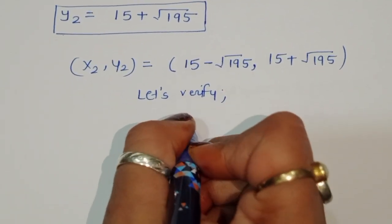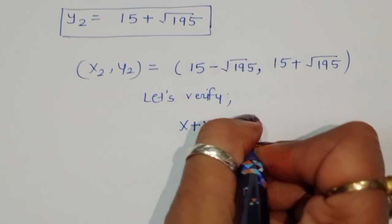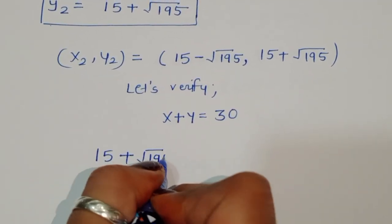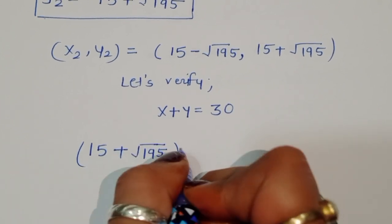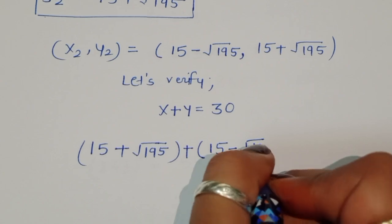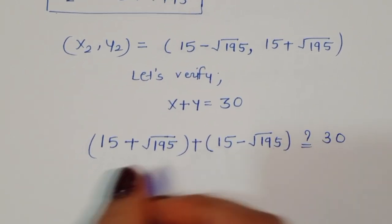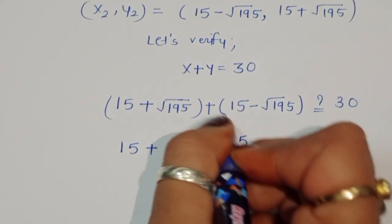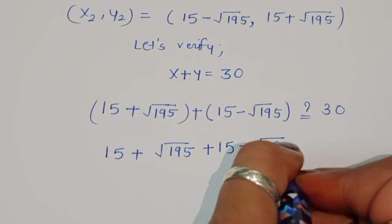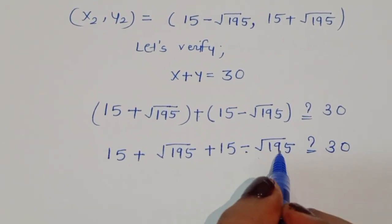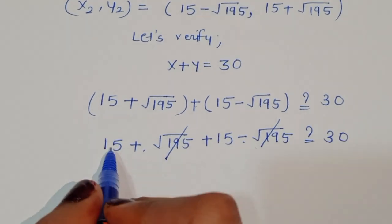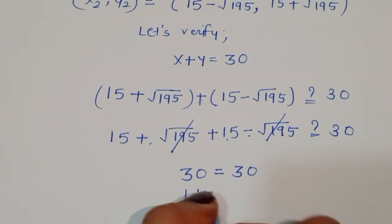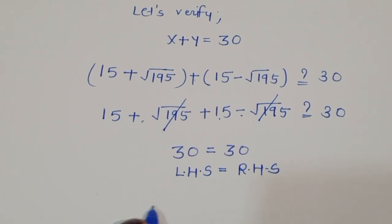Let's verify using equation 1: x plus y equals 30. Substituting x equals 15 plus square root of 195 and y equals 15 minus square root of 195, we get 15 plus square root of 195 plus 15 minus square root of 195. The square root terms cancel, giving 15 plus 15 equals 30. LHS equals RHS, verified.